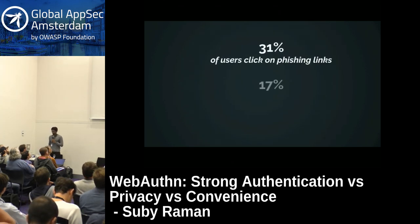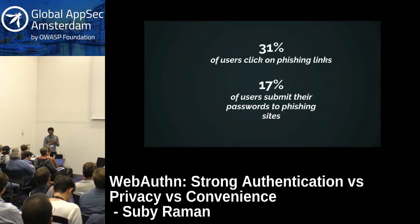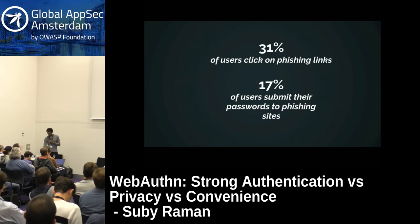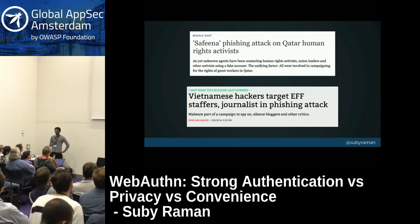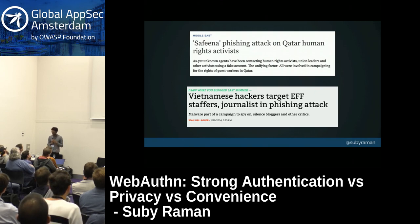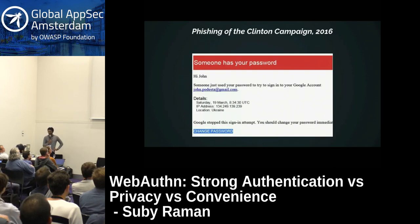According to our data, 31% of users click on phishing links, and 17% of users submit their passwords to phishing sites. This is a very serious problem — all our users are at risk of having their privacy violated in really vicious ways. Activists, for example, are at particular risk of being targeted in sophisticated phishing campaigns by state and non-state actors. Phishing attacks can alter the shape of history, like when a Russian hacking group infiltrated the emails of the Hillary Clinton campaign in America in 2016.